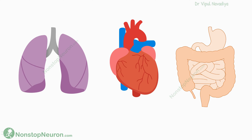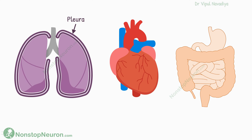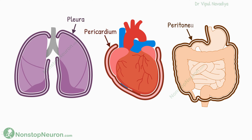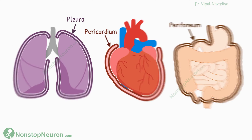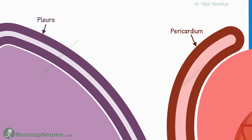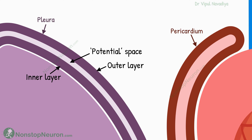Many organs in our body are also wrapped in other structures in such a manner. Like the lungs are wrapped by pleura, the heart is wrapped by pericardium, and intestines are wrapped by peritoneum. And similar to the analogy of the balloon, they also have two layers — one inner and one outer layer — and there is a potential space in between.